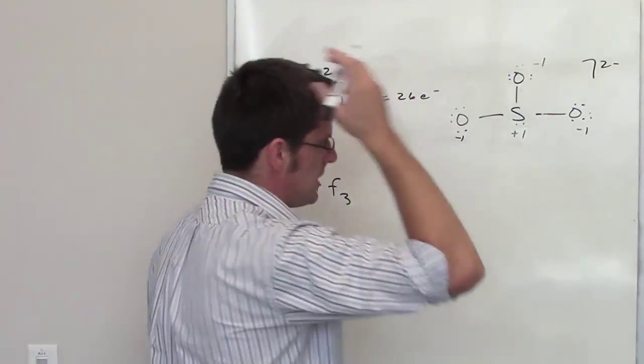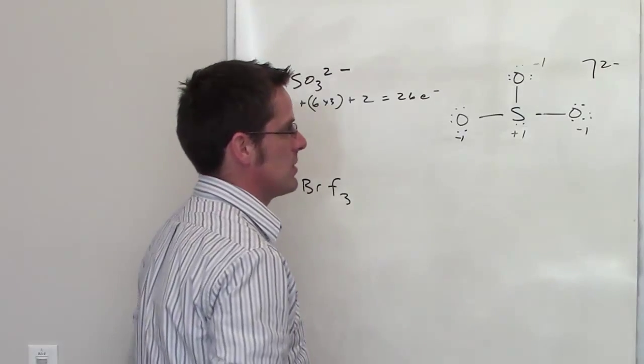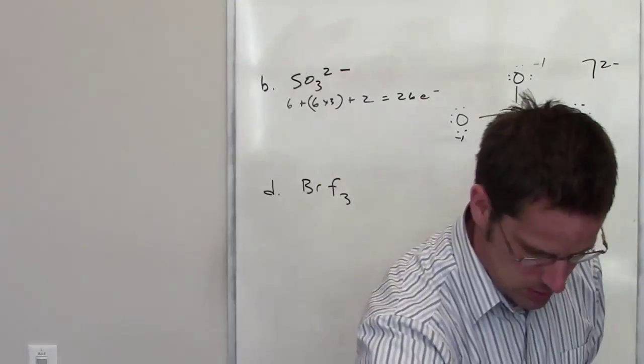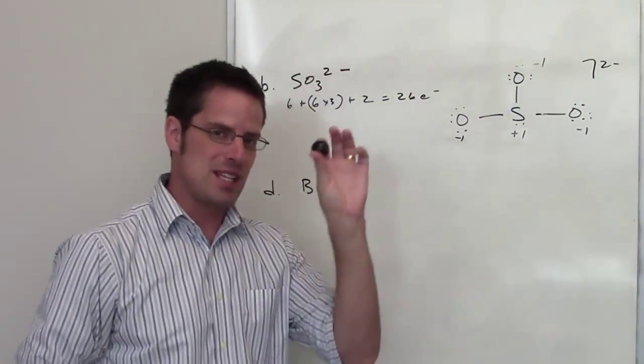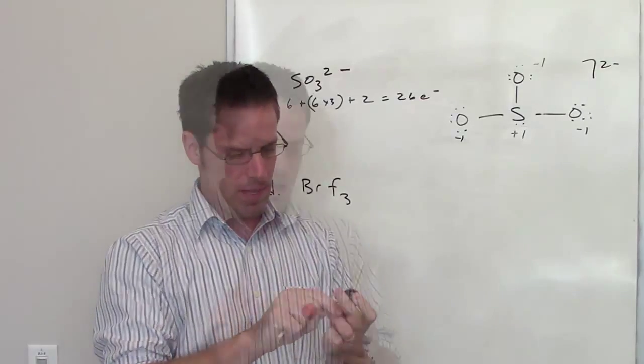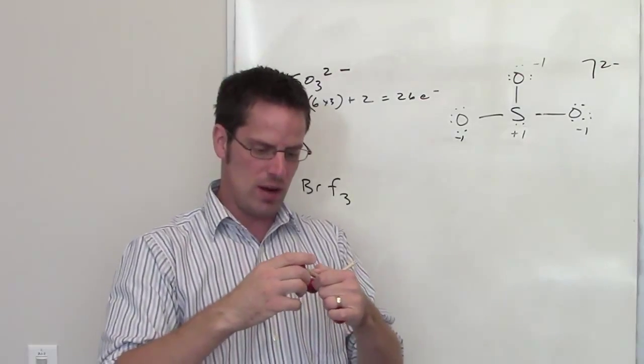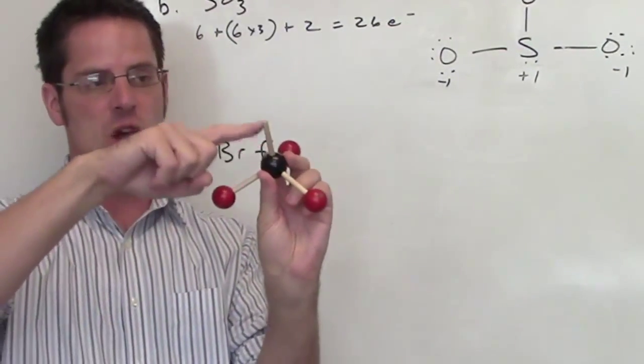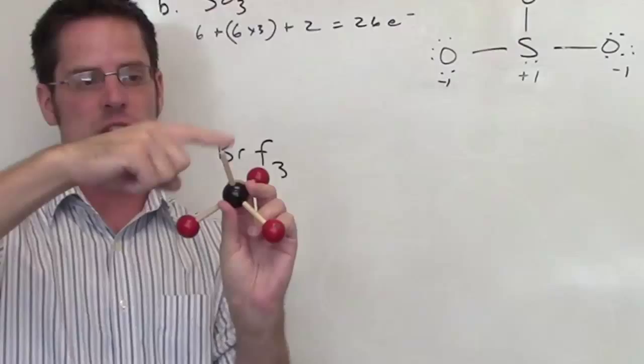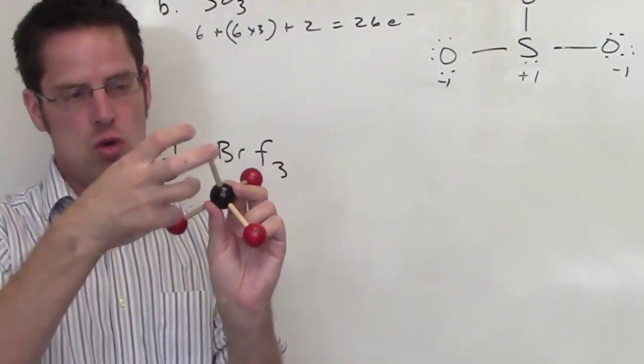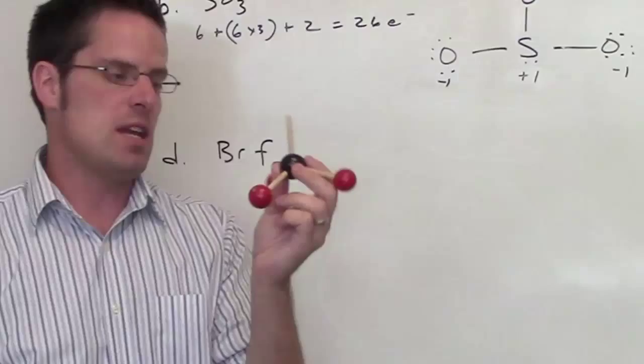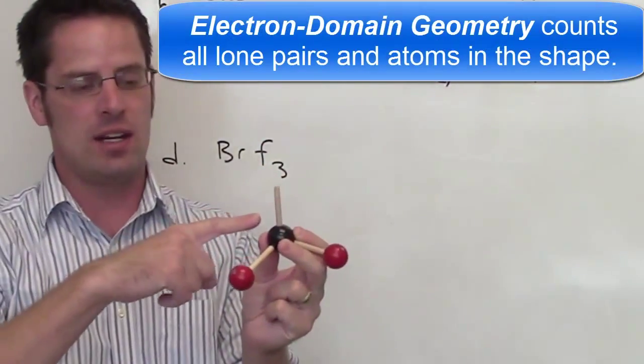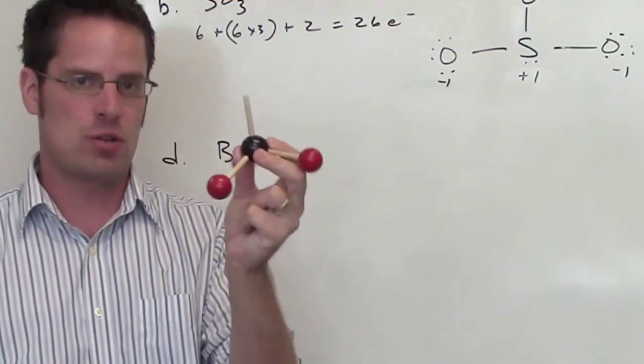So we now need to determine the molecular and electron domain geometries. In this particular case, it's going to be the same either way. I've got four different groups around the sulfur. I'm going to go ahead and assemble a model. I'm going to pretend this black sphere represents my sulfur. The sulfur has three oxygens around it and one set of lone pairs. So in this rudimentary model, I've got three oxygens, and this lone pair represents two electrons floating up here that are not bonded to any atom. The full electron domain geometry, where I include everything including the lone pairs, is tetrahedral.